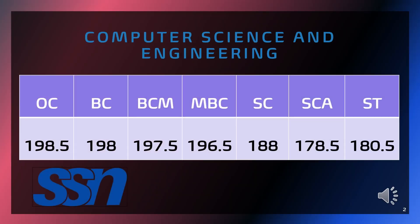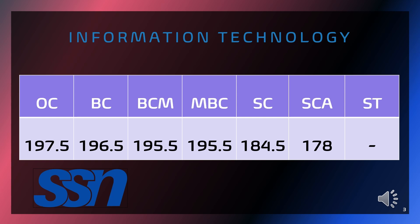Shri Sivasubramania Nader College of Engineering. Cut-off required for CSE: OC is 198.5, BC is 198, BCM is 197.5, MBC is 196.5, SC is 188, SCA is 178.5, ST is 180.5. Cut-off required for IT: OC is 197.5, BC is 196.5, BCM is 195.5, MBC is 195.5, SC is 184.5, SCA is 178.